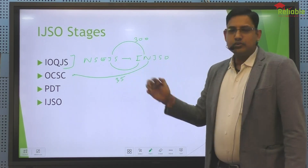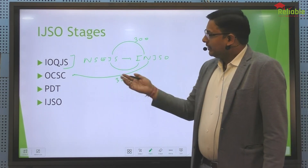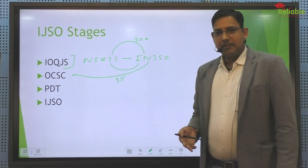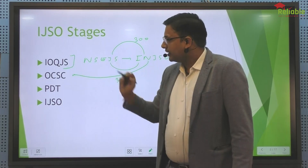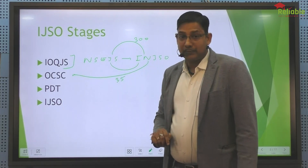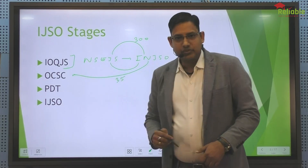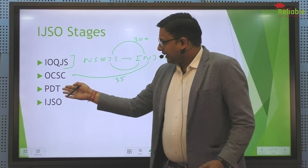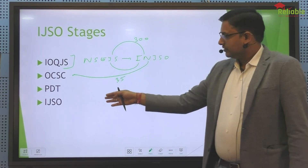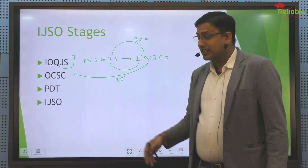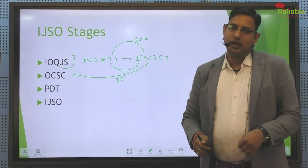But this time they clubbed these two stages and had a single exam — the Indian Olympiad Qualifier in Junior Science. On the official website, these two stages have been announced: they will do the camp, and they have already done this exam. The pre-departure training camp and the final stage of IJSO in the host country have also been announced.